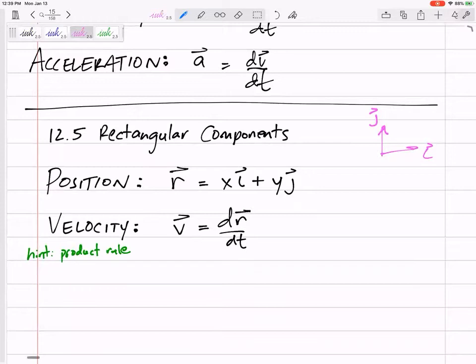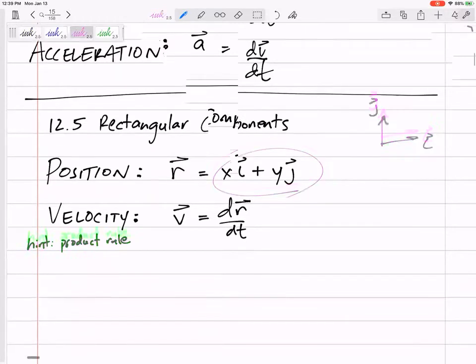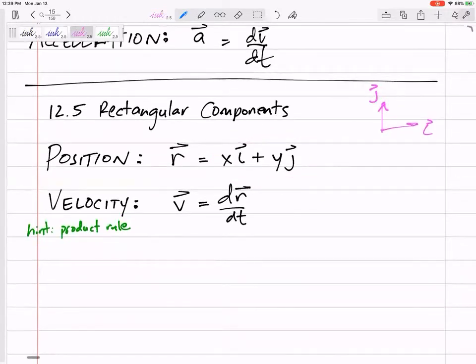And so let's take the derivative of this vector. We have to use a product rule because we really have two things multiplied. X is multiplied times an i. And so the true definition of this velocity,